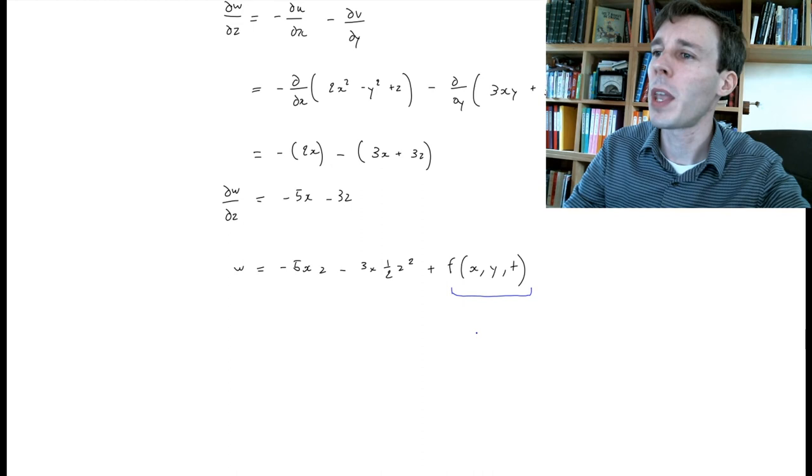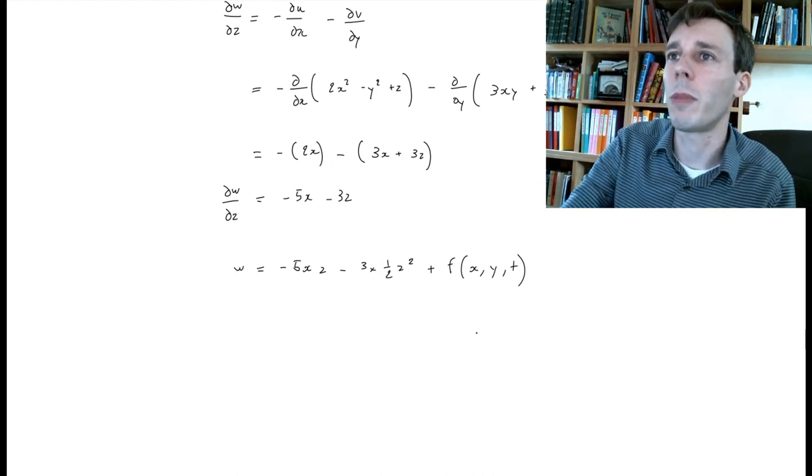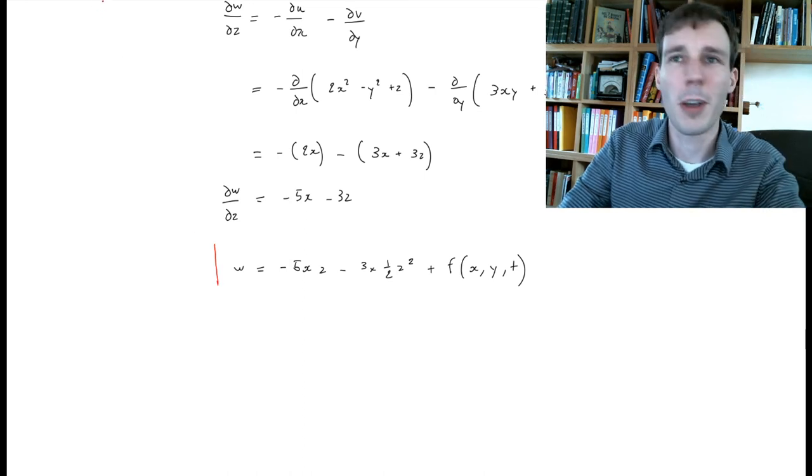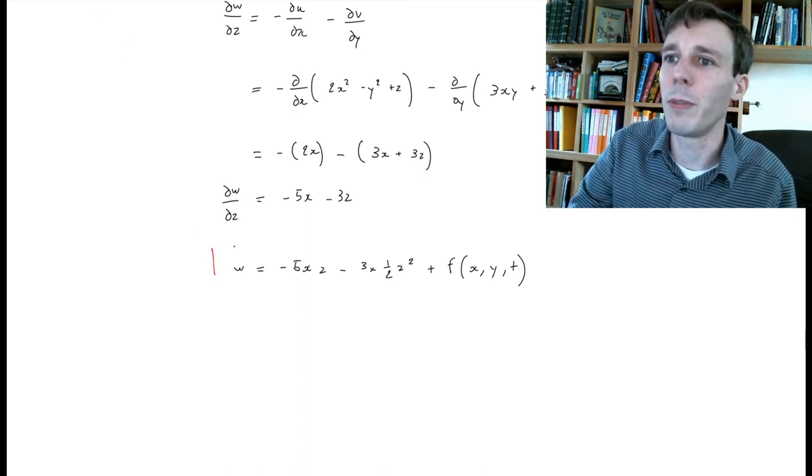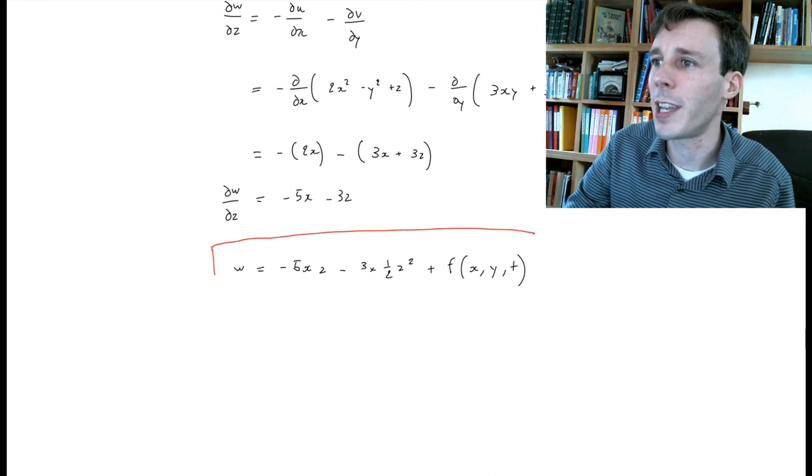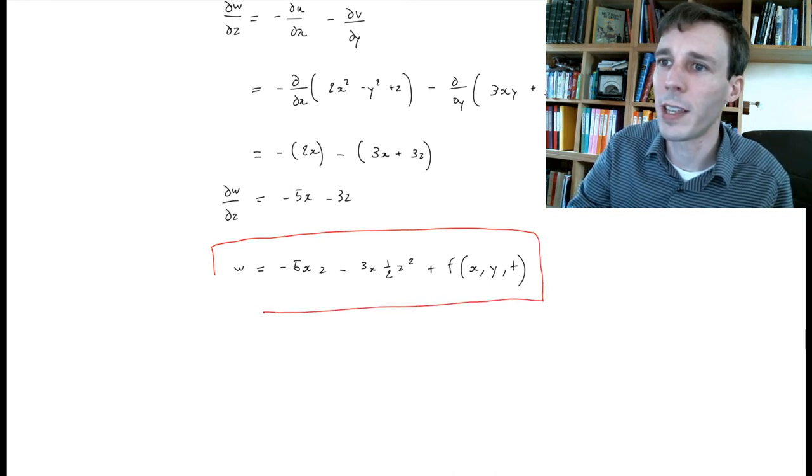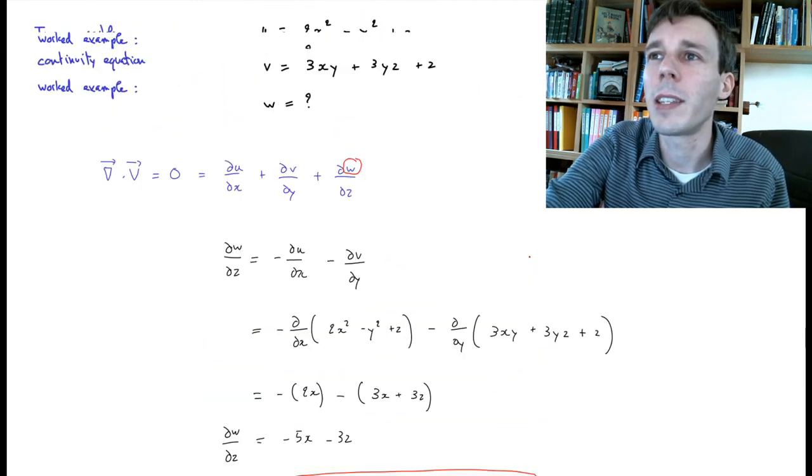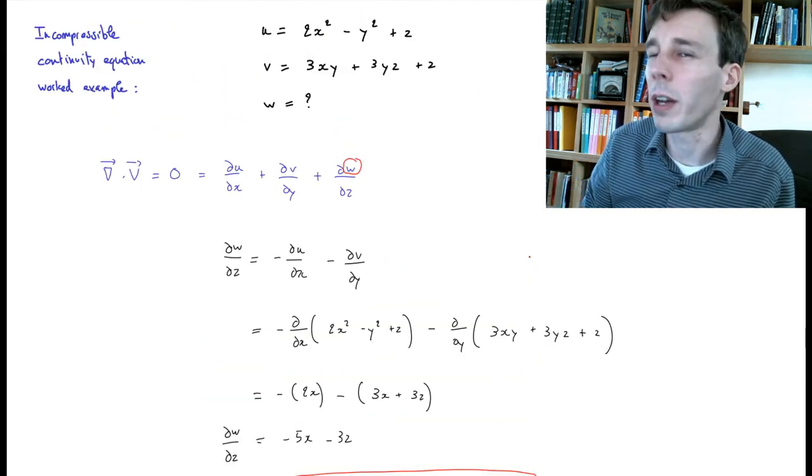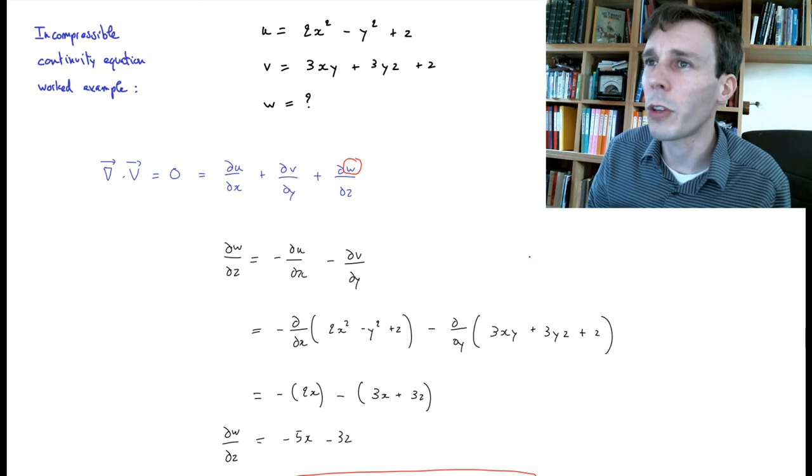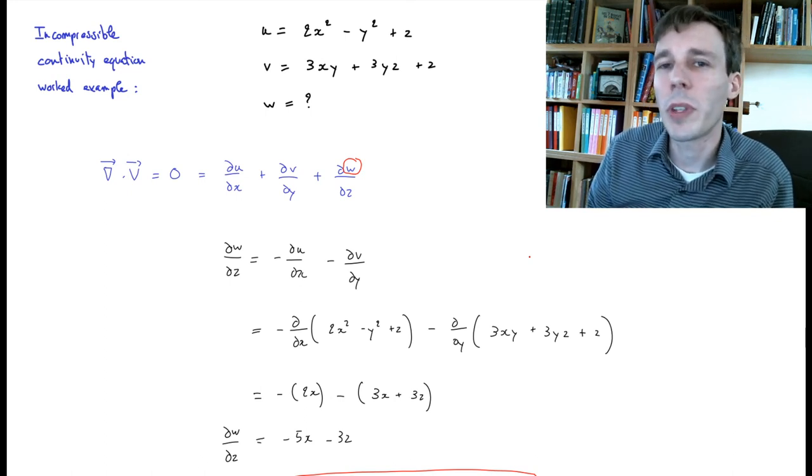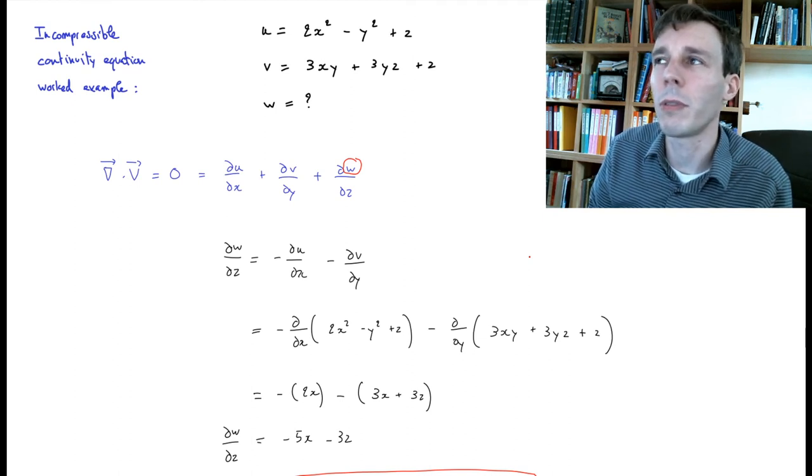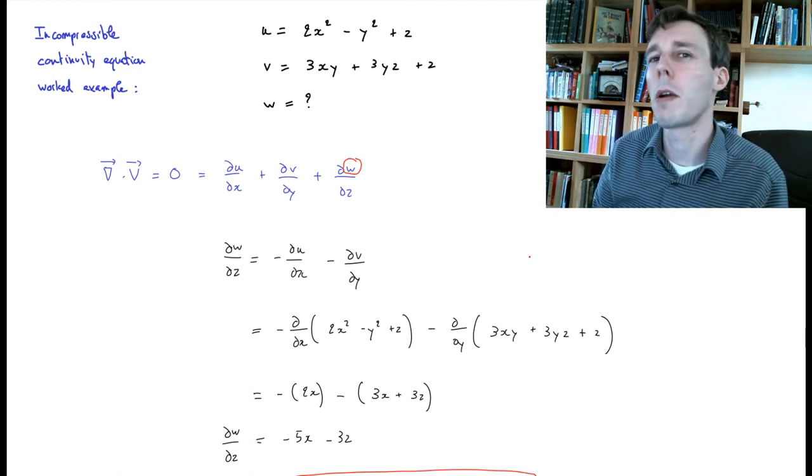In this problem here, the only thing we can tell about w is that w is this function of z but then has unknown components of x, y, and t. And this is extremely frustrating about the continuity equation. The continuity equation does not allow you to predict the velocities, it only allows you to predict how wrong you are.